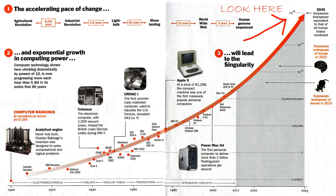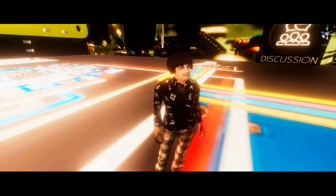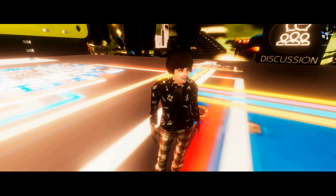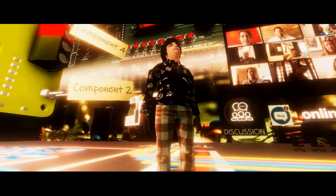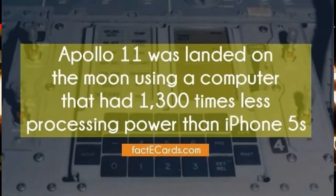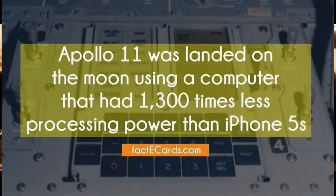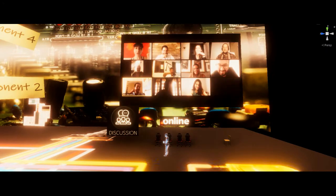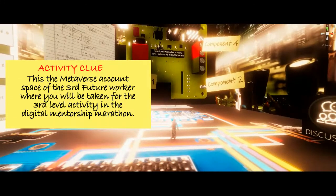The singularity is slated to happen in 2045. But by 2030, which is just 7.5 years away, even if we have one-tenth of that power, we can look at one computer being as powerful as the brains of a billion people put together. What would the world look like in a scenario like that? Did you know that Apollo 11 was landed on the moon using a computer that had 1,300 times less processing power than the iPhone 5? A computer that put a man on the moon was still 1,300 times less powerful than the phone in your hand. This is how fast computation power is moving.